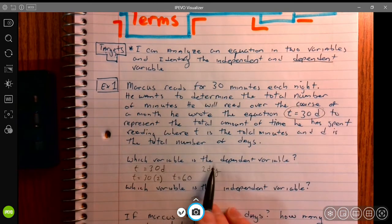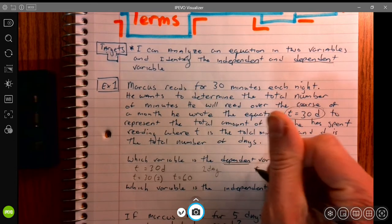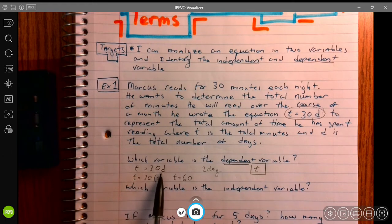So which variable is dependent? t is the dependent variable, because it depends on what we plug in here.